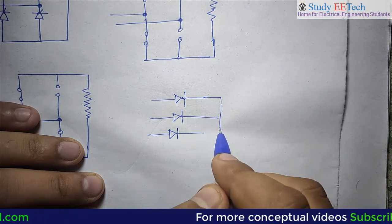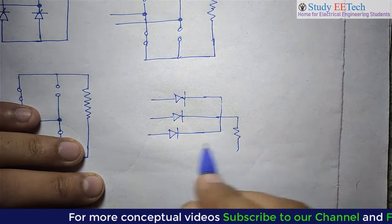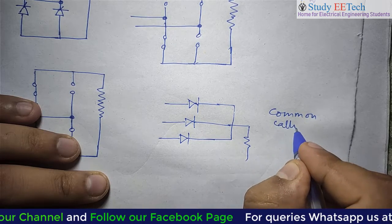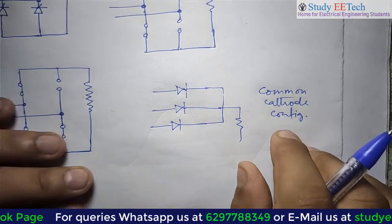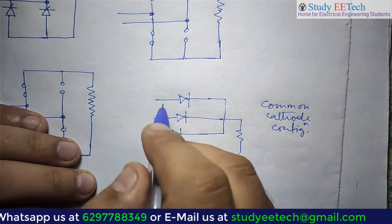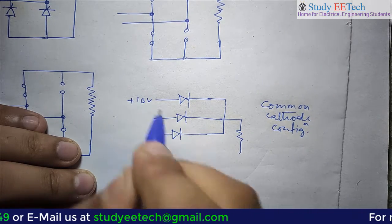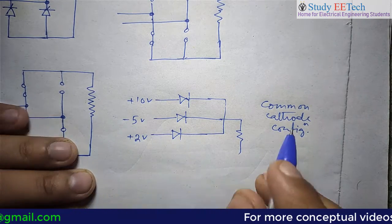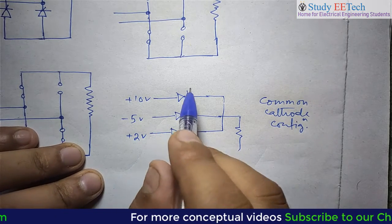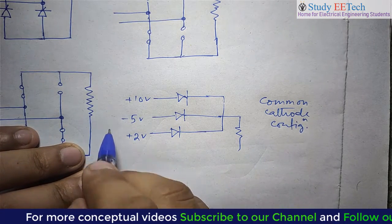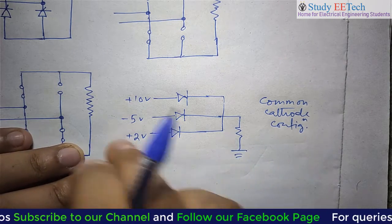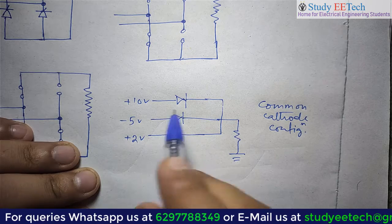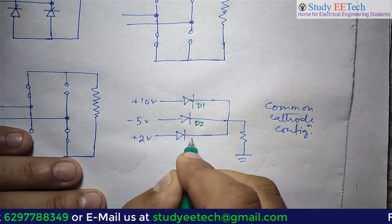We are taking three diodes — you can take more or you can take two also. This is called the common cathode configuration. Now let us say they are fed with different voltages: one voltage is plus 10 volt, this is minus 5 volt, and this is plus 2 volt. You can take different combinations. Now find out which diode or which diodes will conduct. This is D1, this is D2, this is D3.